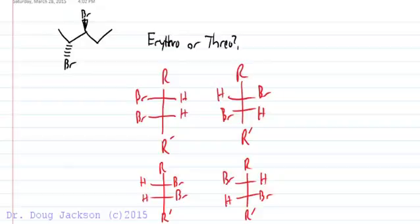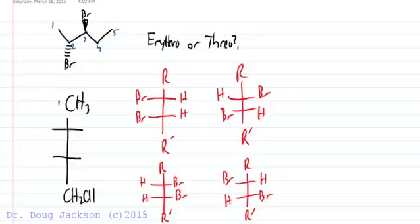I'm going to start with carbon 1 at the top—1, 2, 3, 4, 5 as we would name it. We'll start with a methyl as carbon 1. We have two chiral centers with bromines, and then we have an ethyl group that would be part of the parent chain at the bottom, so carbons 4 and 5.